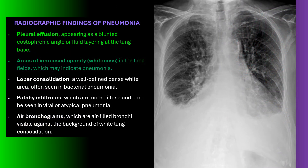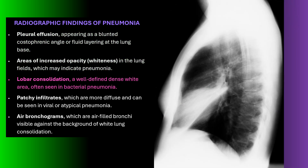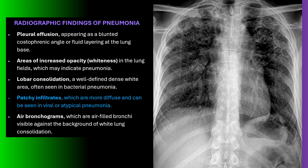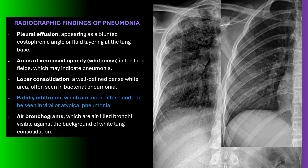Radiographically, we're looking for areas of increased opacity or whiteness in the lung fields, which may indicate pneumonia. Blunting of the costophrenic angle could be indicative of pleural effusion. It is not uncommon to see lobar consolidation — a well-defined dense white area that respects the boundaries of the lobe. Sometimes it will appear as a more patchy infiltrate, which is more diffuse and can be seen in viral or atypical pneumonia.